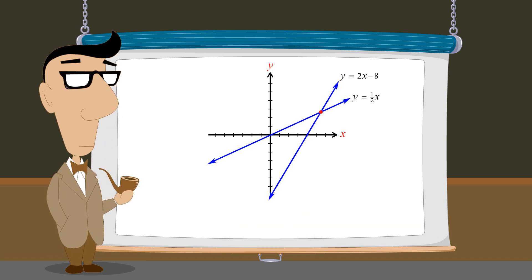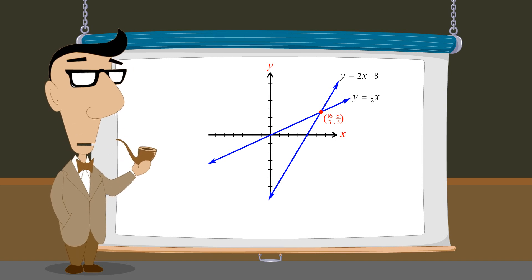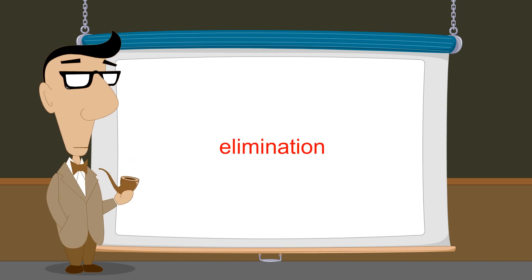Recall that the process of finding the coordinates of these intersection points is called solving a system of equations. In the last lecture, we solved systems of two linear equations using the substitution method to find values for x and y which simultaneously satisfy both equations. These values are the x and y coordinates of the intersection point of the graphs. In this lecture, we will introduce another method of solving a system of equations called the elimination method.